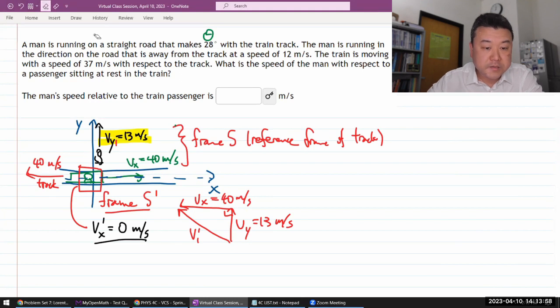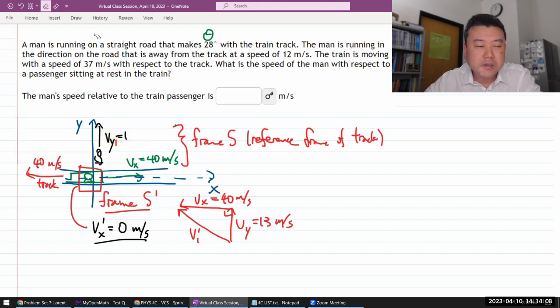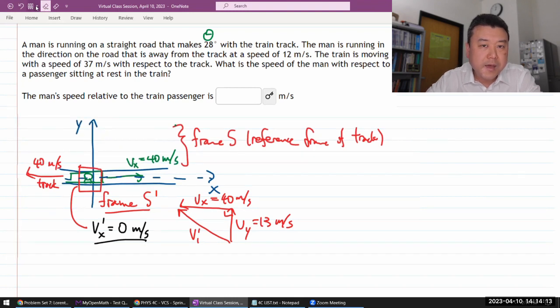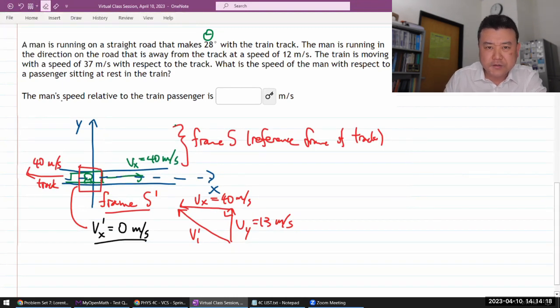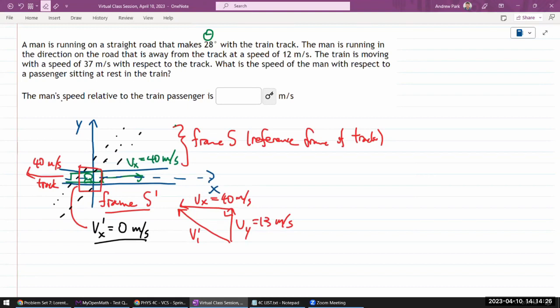All right. Let's do this carefully. So, direction of the road that is away from the track at a speed of, all right. Let me just throw my interpretation of the question. So, the way I see it, there is, and I'm making some assumptions as I do it. That's why I'm trying to spell it out. So, there's a road that's going this way, and this is the angle theta, and the man is running in this direction away from the track at a speed of 12 meters per second.